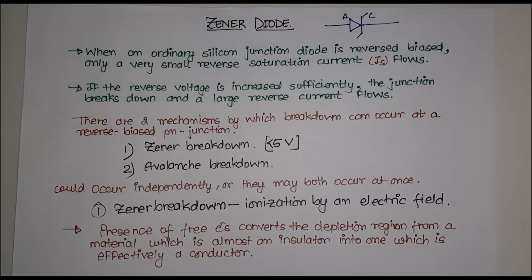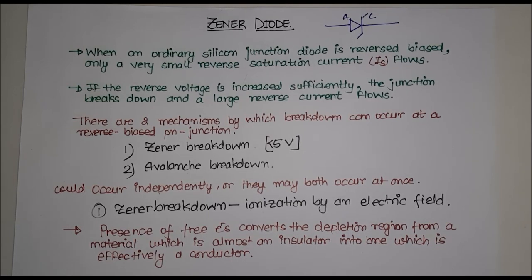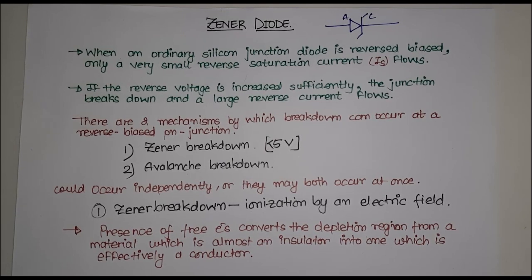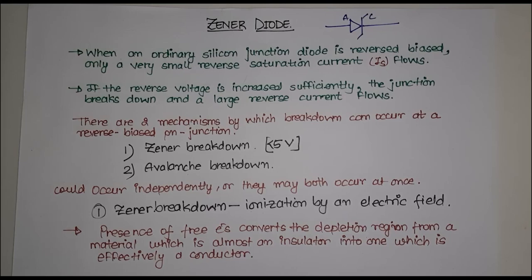Hello guys, welcome back to Last Moment Questions. I am Dhruvi and today we'll be learning about Zener diode. Zener diode is a special purpose PN junction diode which works in reverse bias condition. Normally when we consider a silicon junction diode there were two types of biasing — forward bias as well as reverse bias — but Zener diode will be using only in reverse bias condition.